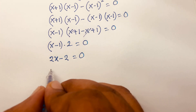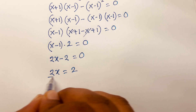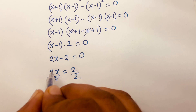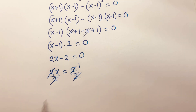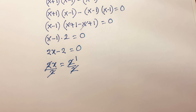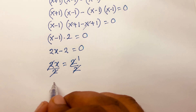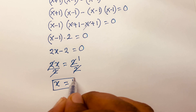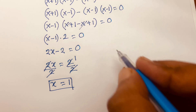So 2(x-1) equals 0, which gives 2x equals 2. Dividing both sides by 2, the 2s cancel and we find x equals 1. This is our final answer.